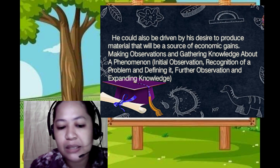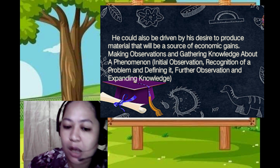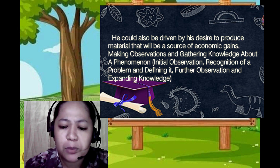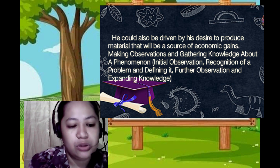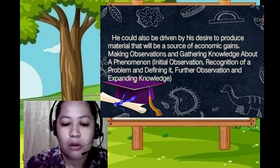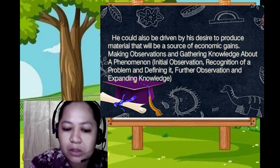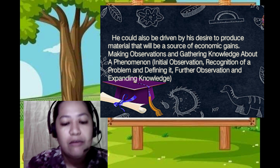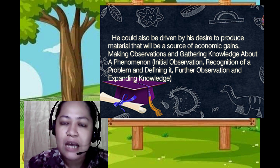He could also be driven by his desire to produce material that will be a source of economic gains. The steps involve making observations and gathering knowledge about a phenomenon, initial observation, recognition of a problem and defining it, and further observation and expanding knowledge. Scientific method is also used by people or individuals who want to gain something out of it, like economic gains. They begin with observation, then gather knowledge about the phenomenon, recognize a problem, define it, and expand their knowledge.